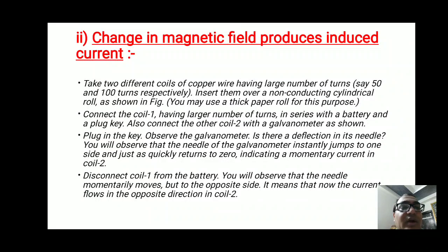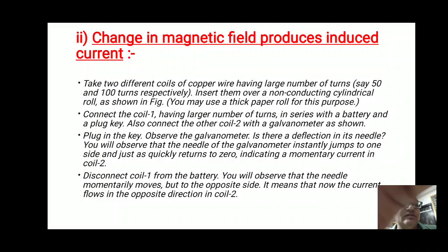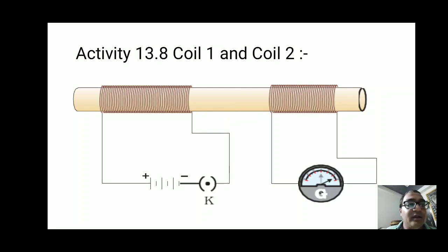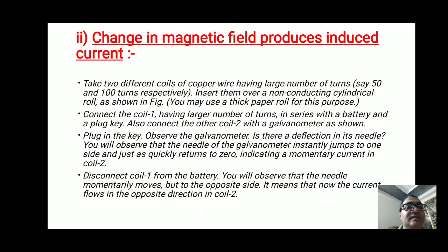Now disconnect coil 1 from the battery. You will observe that the needle momentarily moves to the opposite side — the current flows in the opposite direction in coil 2. When switching off the circuit or removing the plug key, the galvanometer needle deflects towards the left and comes back to zero. When steady current passes, the galvanometer needle does not deflect — it remains at zero. This is the second activity.